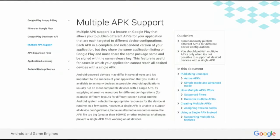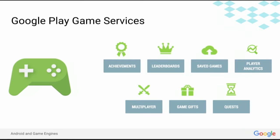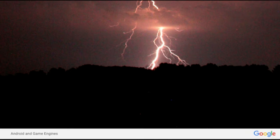Google Play offers a feature called multiple APK support to allow you to post different APKs which target different hardware versions. We're going to cover two of the most important ways you can use it: texture formats and ABIs with a few different game engines. We'll also talk briefly about integrating Google Play Game Services. I only have five minutes and I've already used a minute and 15 seconds.